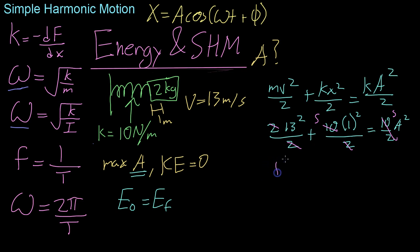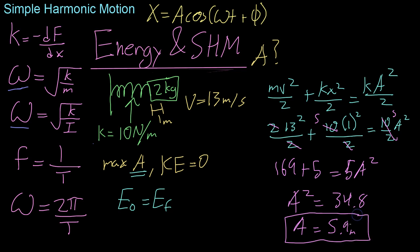Now, we get that 169 plus 5 equals 5a squared. Dividing through, we get that a squared equals 34.8, or that a equals 5.9 meters. So, in this situation, we know that the maximum this will ever reach from its equilibrium point is 5.9 meter displacement.